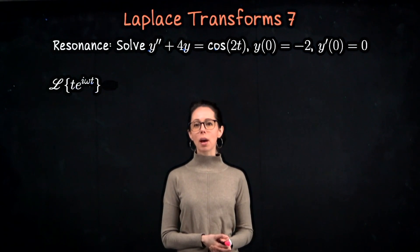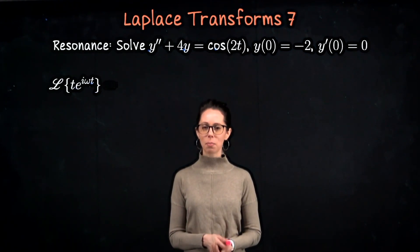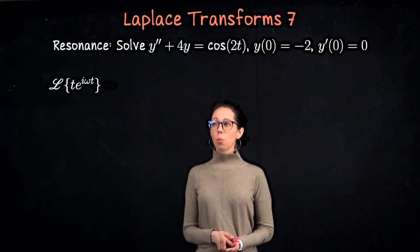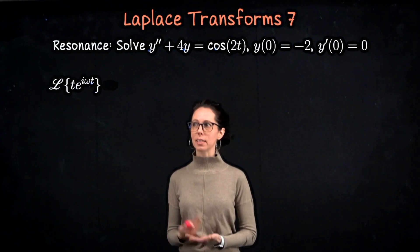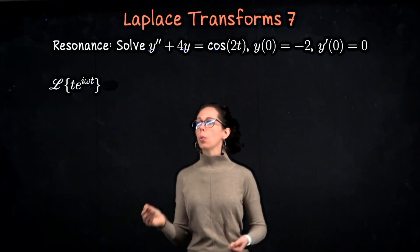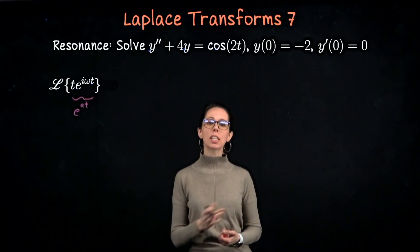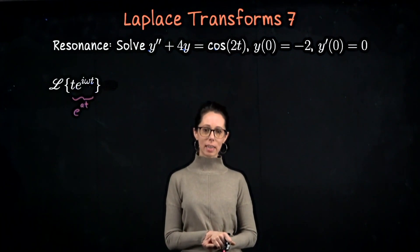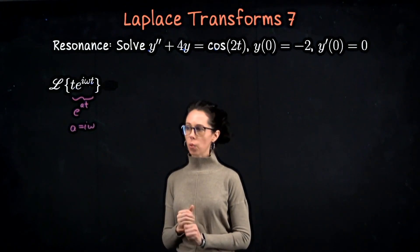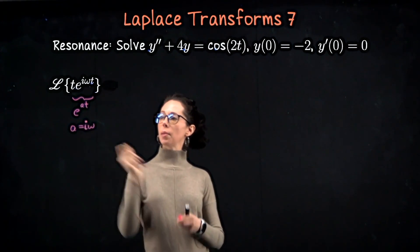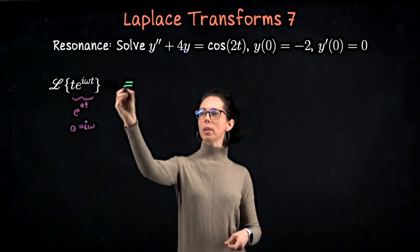Let's start as a warm-up by taking the Laplace transform of t times the complex exponential e to the i omega t. We've taken the Laplace transform of a function times an exponential before — in the previous video we called this type of exponential e to the at, and it produced a translation in s. Here a is i omega, so the Laplace transform of t times e to the i omega t is the Laplace transform of t but shifted — that's one over s squared, evaluated at s minus i omega.